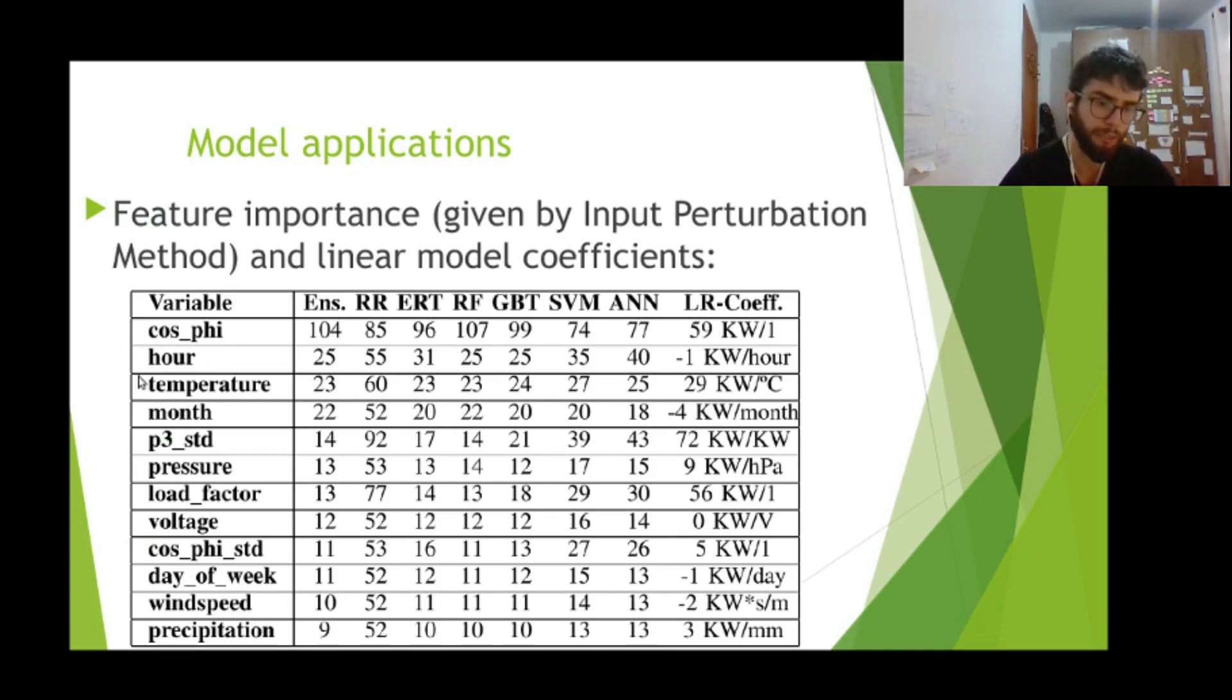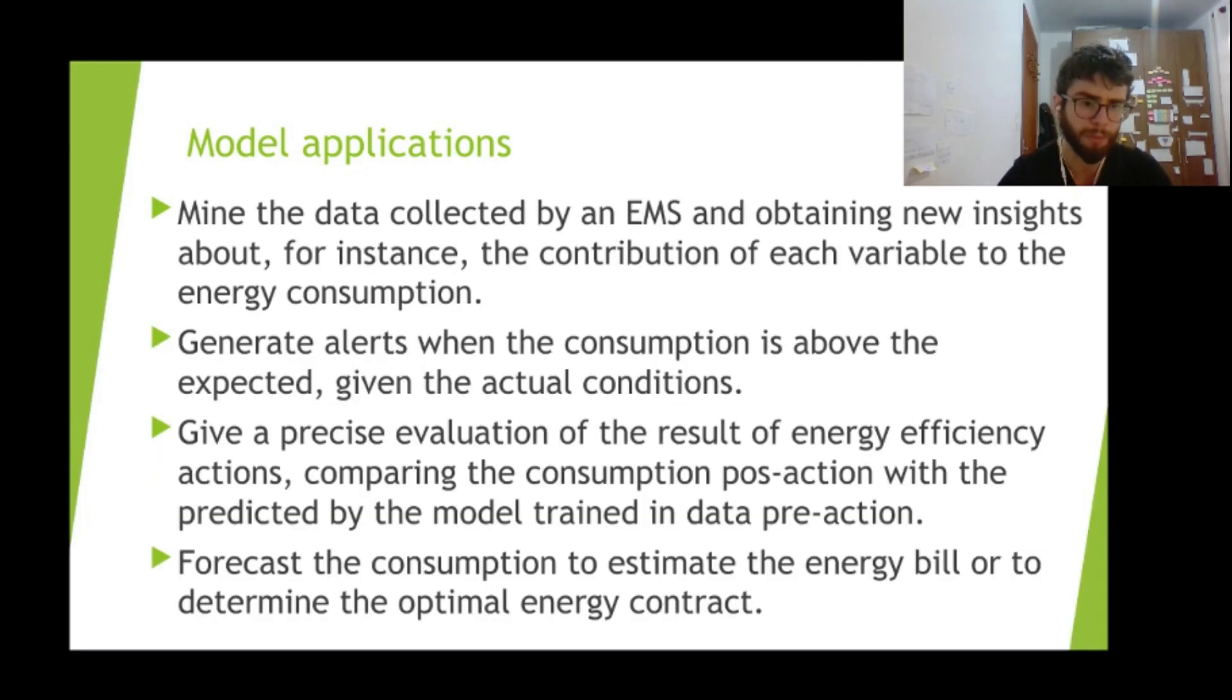On the other hand, if we are trying to predict without the precipitation value, if we don't have precipitation from our measurement systems or from other forecast systems, this will not lead to a higher problem, because this is not an important variable.